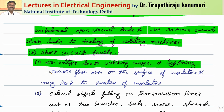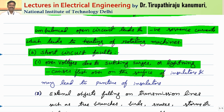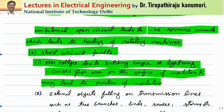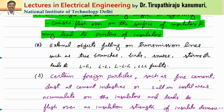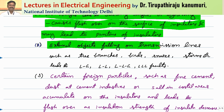During switching transients, very high voltages arise, causing flashover on the surface of insulators in the case of overhead lines, or complete dielectric breakdown in the case of cables or machines. This may lead to puncture of the insulators or breakdown of insulation in cables. The second possible reason is external objects falling on transmission lines — such as tree branches or birds — which can lead to short circuits.